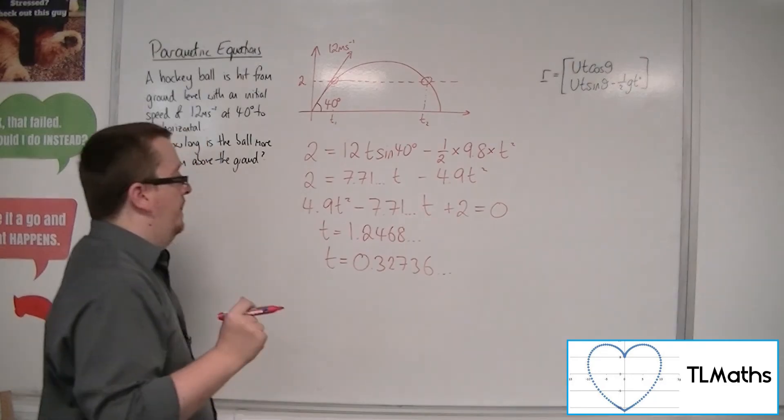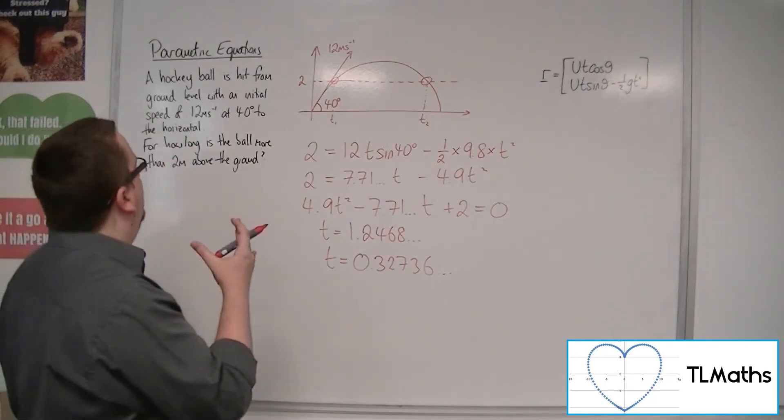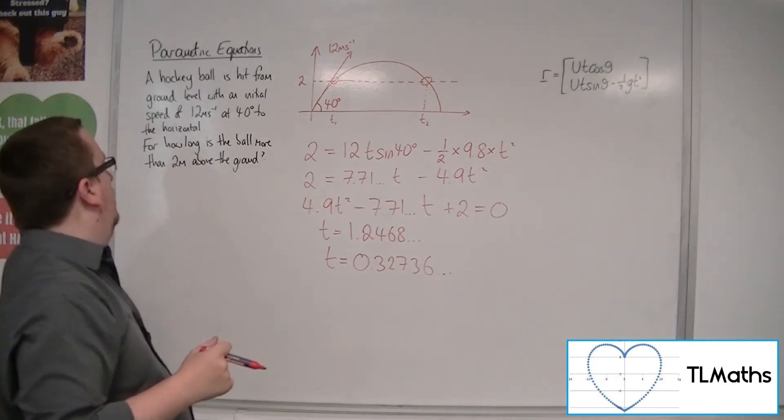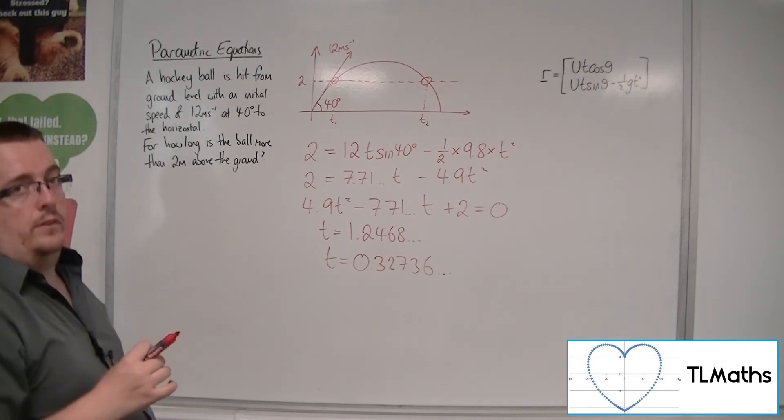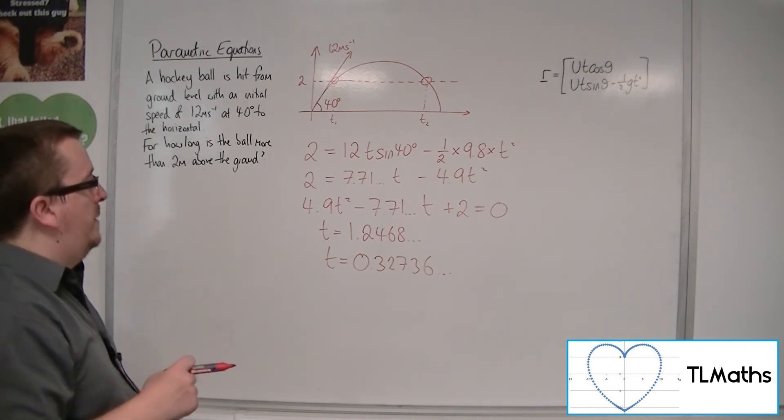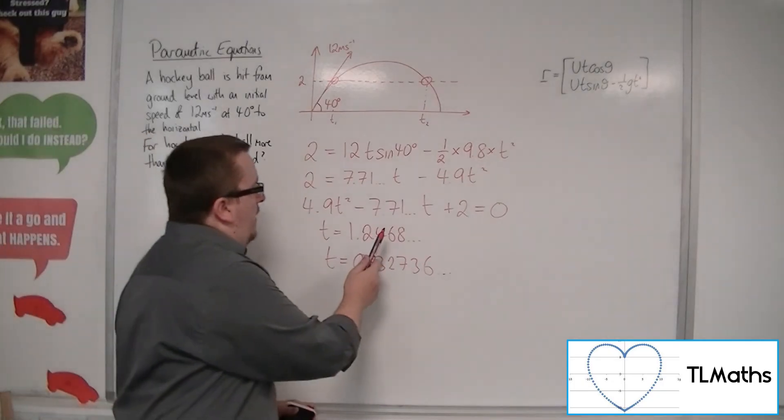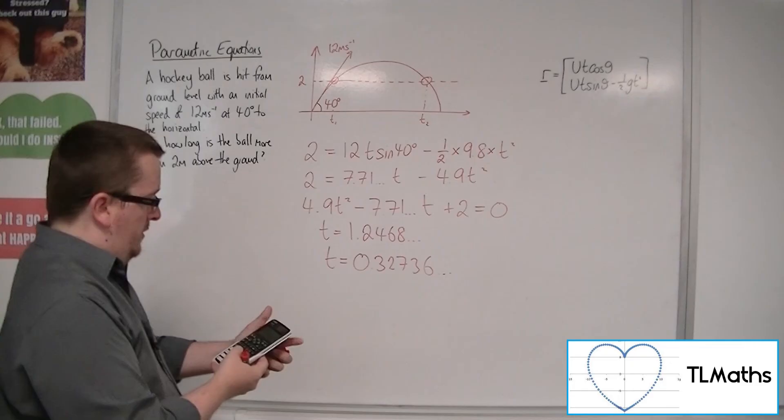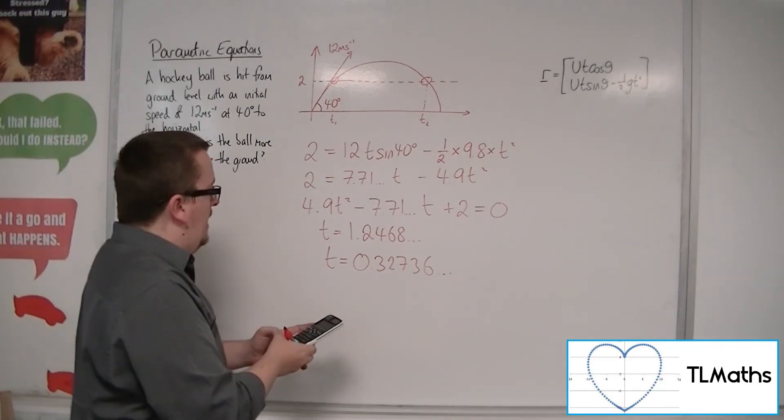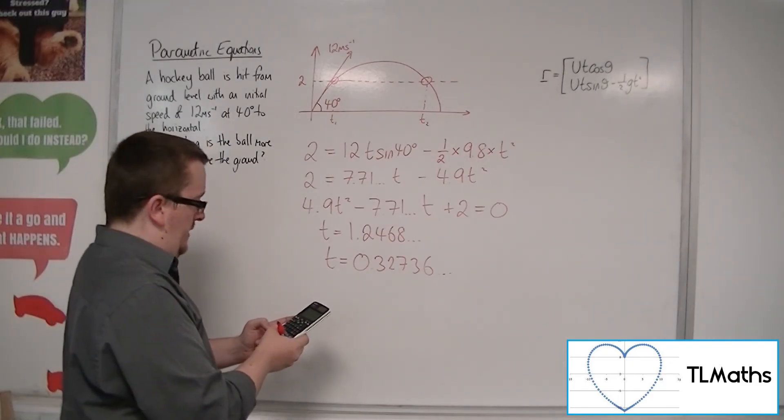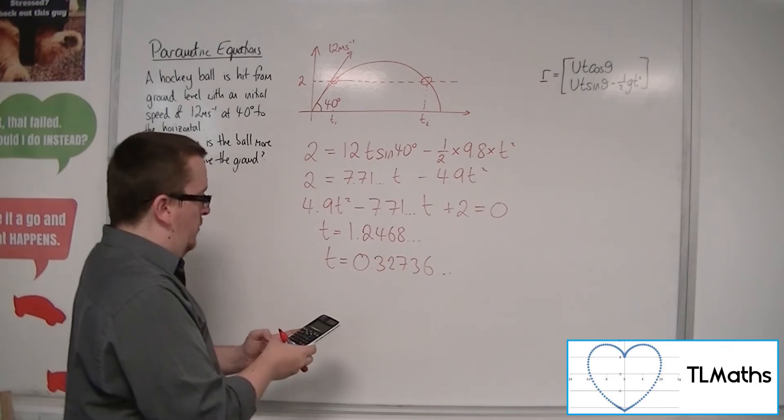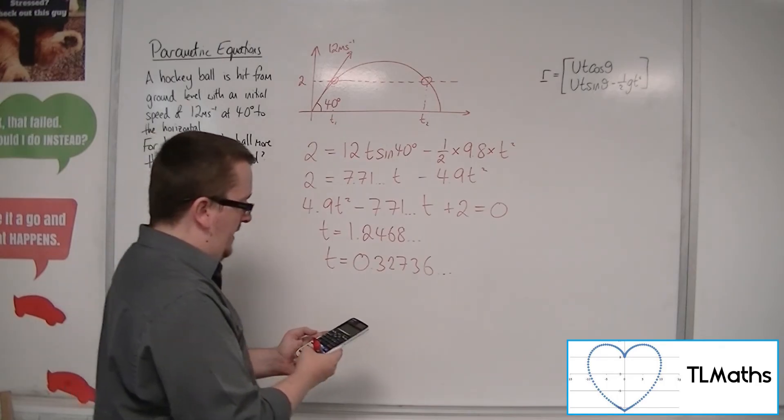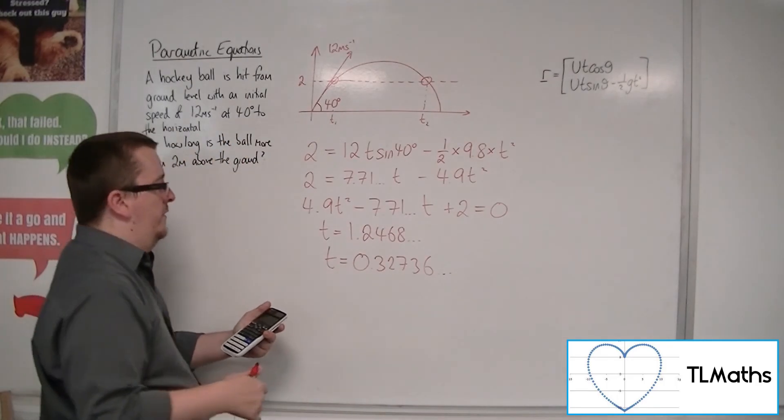So we want to find how long the ball is above 2 metres above the ground, more than 2 metres above the ground. So we want to have that value subtracted by that value. So 1.2468, take away 0.32736. I only want it to 3 significant figures.